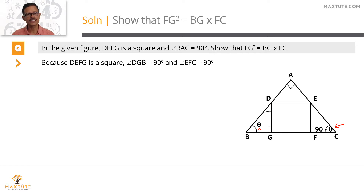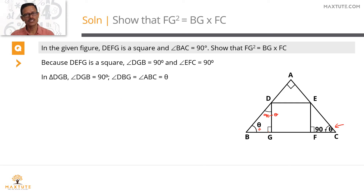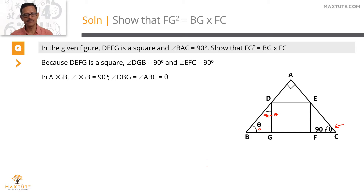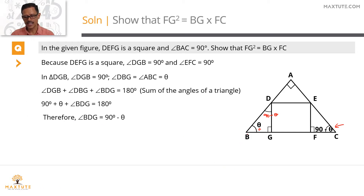Let's focus on triangle DGB — it's a right triangle. One angle is 90 degrees, the second angle is θ (angle DBG = angle ABC = θ). Therefore the third angle, angle BDG, equals 90 − θ. To summarize: angle DGB = 90 (exterior angle of the square), angle DBG = θ, and by the angle sum property angle BDG = 90 − θ.